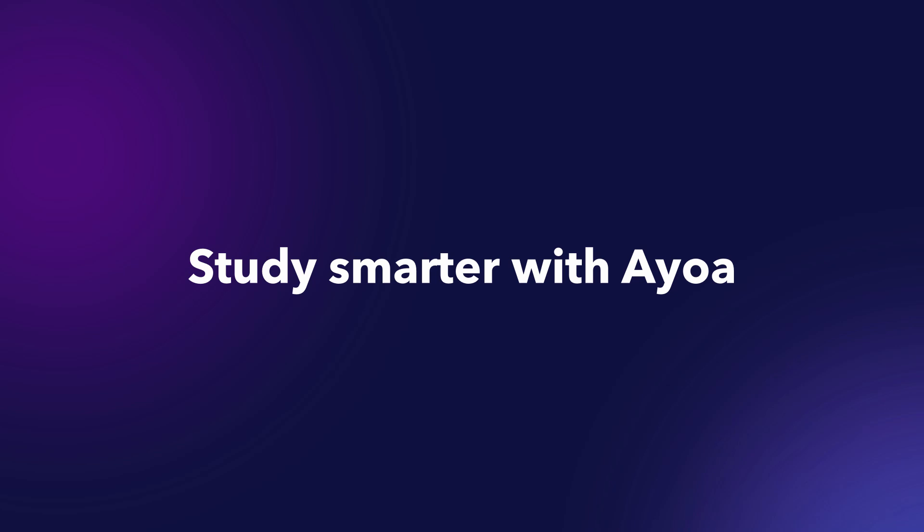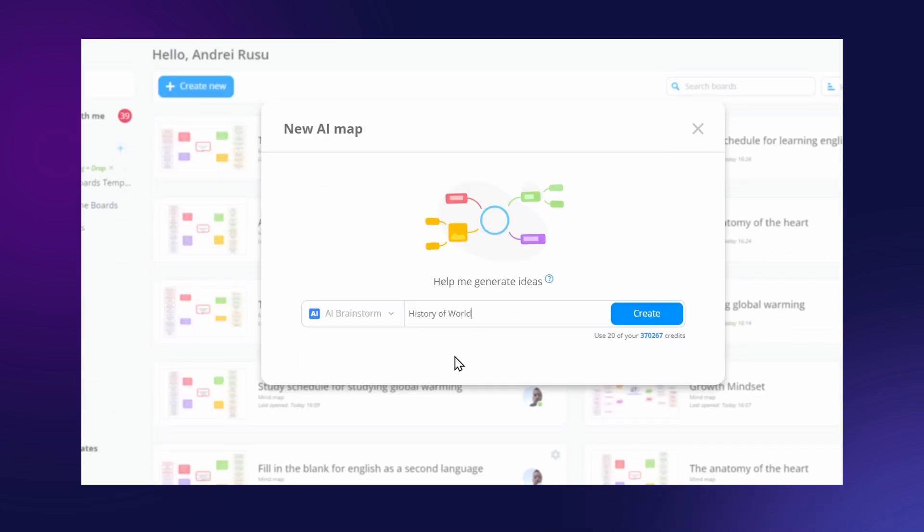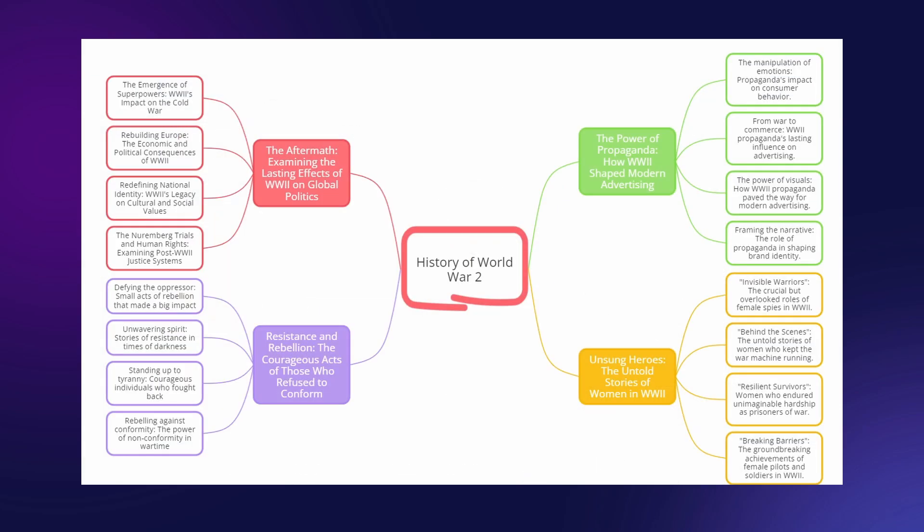So let's see how we can study smarter with AOA. Let's say you have a history exam coming up and it's about World War II. You can use the AI to create a full Mind Map for you, giving you a powerful head start.